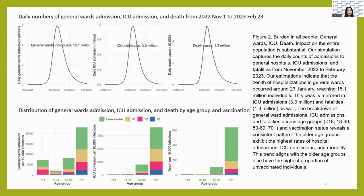Our estimates indicate that the peak of hospitalizations in general occurs around January 23rd, reaching approximately 15.1 million individuals. The peak is also mirrored in ICU admissions and fatalities. The plots reveal a consistent pattern: the older age groups exhibit higher rates of hospital admission, ICU admission, and mortality.